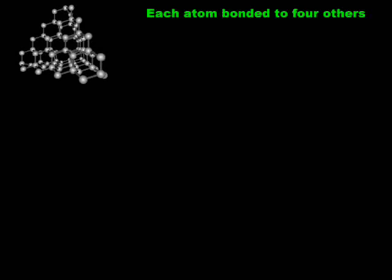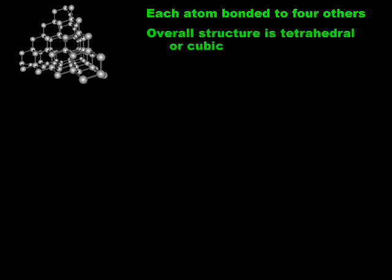In the diamond structure, each carbon is connected to four others in a tetrahedral arrangement. The resulting structure can be viewed as tetrahedral or cubic, depending upon your perspective. Diamond is a network covalent solid, which means that it has covalent bonds that extend throughout the structure in three dimensions.